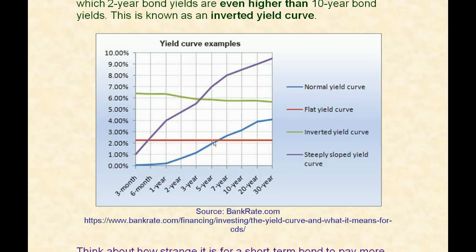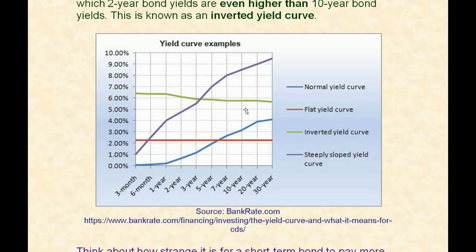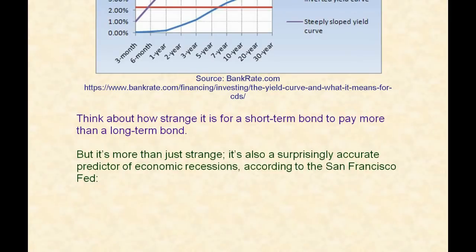But it gets bizarre when the line flattens out, like the red one here. When the 2-year bonds pay just as much as the 10-year bonds, that's not how it should be. That green line actually inverts — then you've got the 2-year bonds paying even more than the 10-year, 20-year, and sometimes even 30-year bonds. When the 2-year bonds pay more than the 10-year bonds, that's very strange and it should not be like that. It's not a good sign in most cases. Think about how strange it is for a short-term bond to pay more than a long-term bond — it doesn't really make sense and it shouldn't be like that.